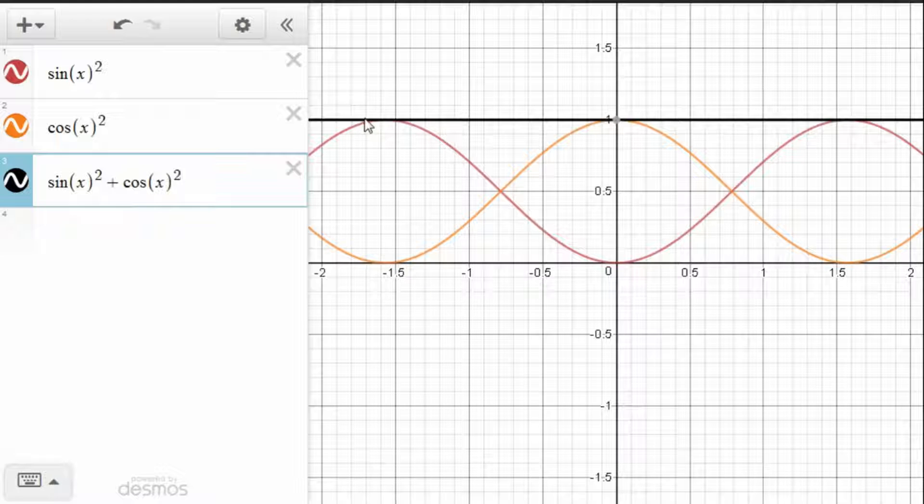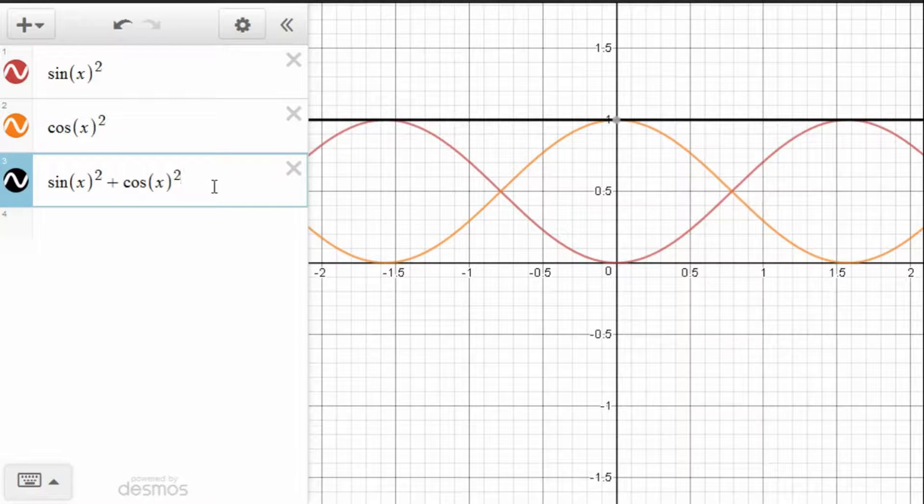So that was a visualization of the Pythagorean trigonometric identity. In other words, sine of x squared plus cosine of x squared is equal to 1.